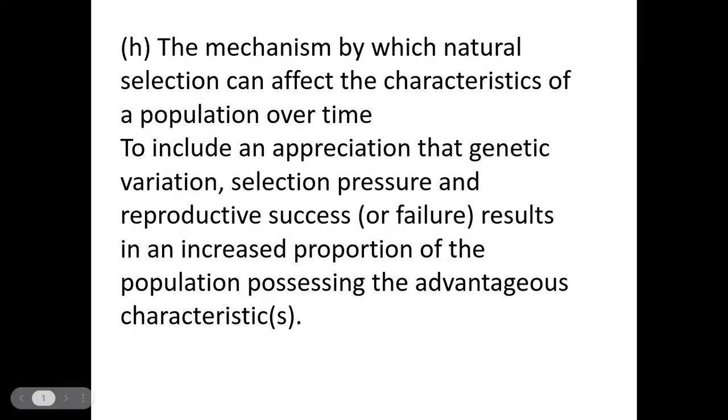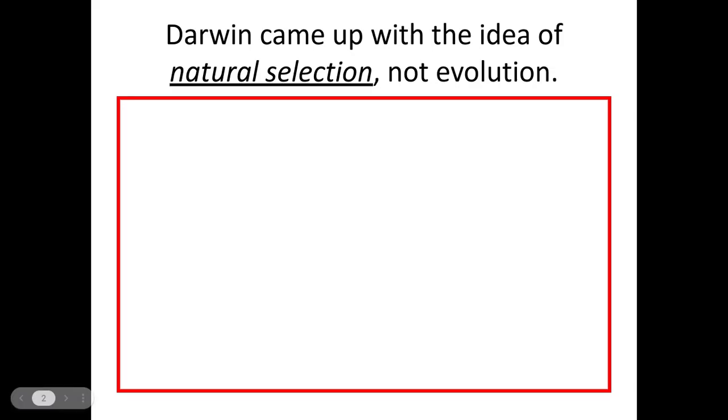Now Darwin came up with the theory of natural selection, not evolution. Natural selection is where a series of events will allow the evolution of a species over time. So everything in the red box here is taken directly from the mark scheme.